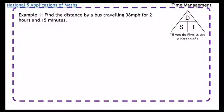Right, we're going to do some more speed distance time calculations, but this time we're going to have some decimal hours to deal with as well. Okay, so this is find the distance by a bus travelling 38 miles per hour for 2 hours and 15 minutes.